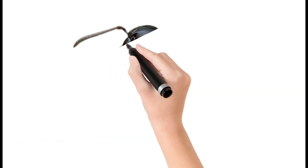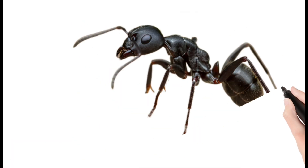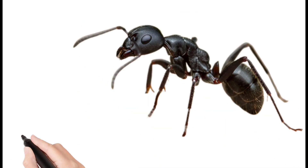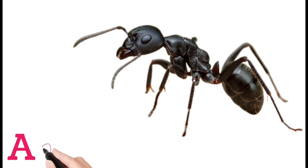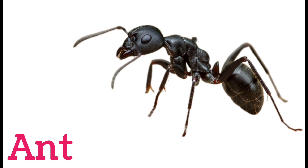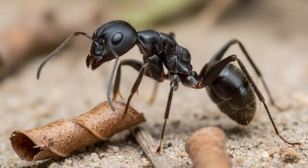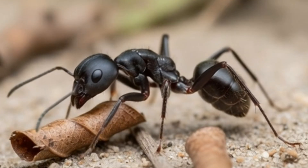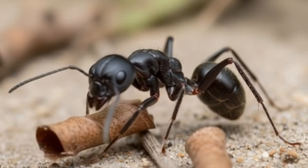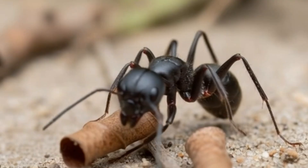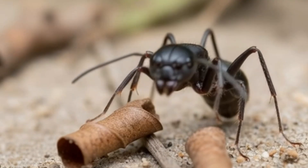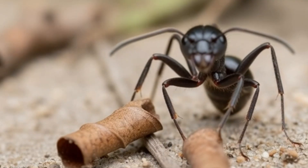Ant. An ant is a small insect that lives in large colonies. Ants work together to collect food and build nests. They are very strong compared to their size.